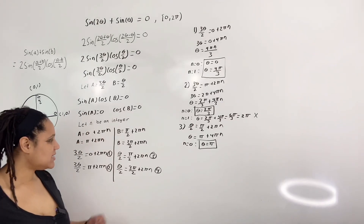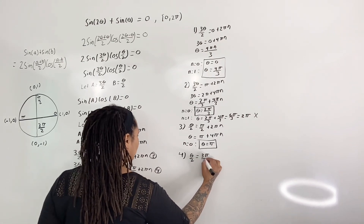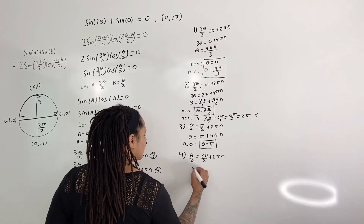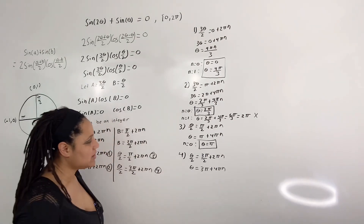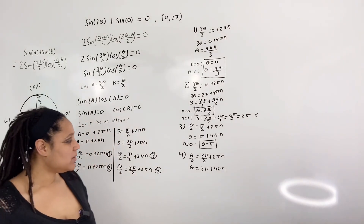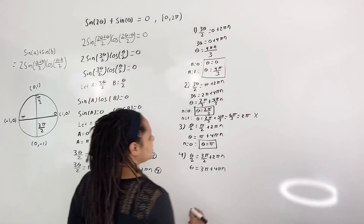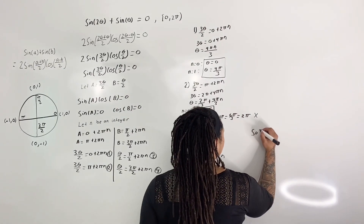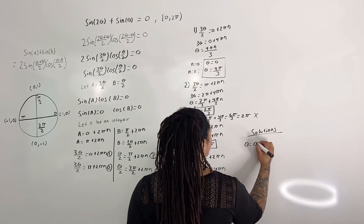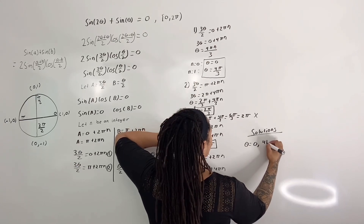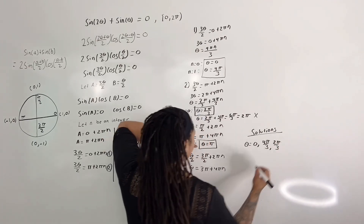For Equation 4: theta over 2 equals 3 pi over 2 plus 2 pi n, which means theta equals 3 pi plus 4 pi n. No matter what integer value we plug in for n, we get a number outside our interval. So our final solutions are theta equals 0, 4 pi over 3, 2 pi over 3, and pi.